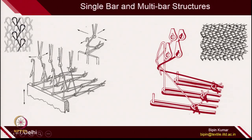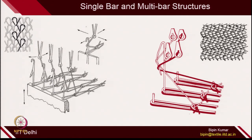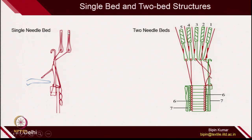In the last class, I already discussed different possibilities of creating overlap and underlap. For single bar construction, only 1 set of guide bar having similar movements provides yarn to the needle — 1 guide bar is associated with 1 particular needle. Once 2 guides per needle are there, you create a multibar or 2-bar structure. The other possibility is single needle bed and 2 needle beds.